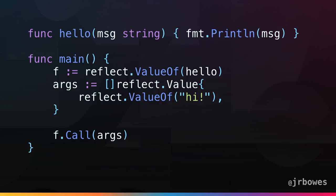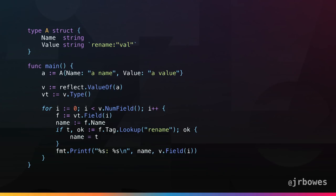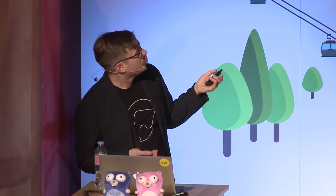Another example: functions are types too, so we can take a function instance, get the value of it, and build up arguments. You can inspect the type of the function to see the types of all its arguments and return values, and then call the function with those arguments via reflect. The big example for reflect is marshaling a value: here we have a struct with name and value fields, one of which has a struct tag to override the field name for output. In the loop over fields we do a lookup of struct tags and if something is defined for our keyword we override the value.